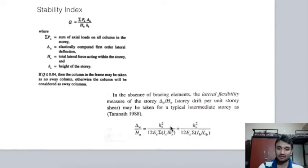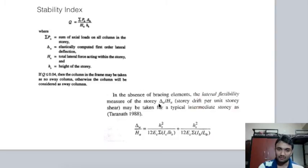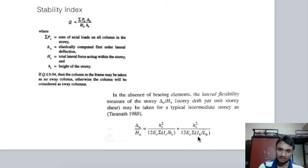Always refer to Wood's theory for the full derivation. Δu / hu is the story drift per unit story shear. In actual framing elements, the lateral flexibility measure is story drift per unit story shear. This is computed as hs² / (12·Ec·Σ(Ic/hs)) for columns and hs² / (12·Ec·Σ(Ib/Lb)) for beams.